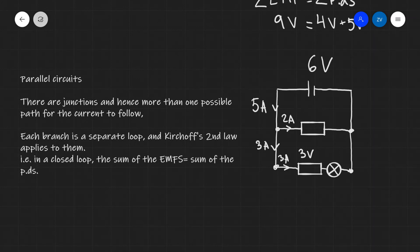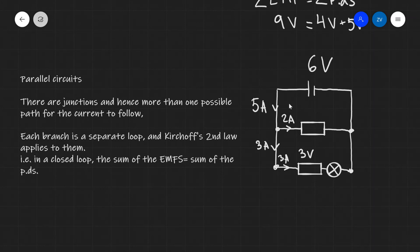Kirchhoff's second law applies separately for each loop. So in every closed loop, the sum of the EMFs is equal to the sum of the PDs. In this first loop, you can think of it as its own separate circuit — there is essentially only one source of PD and one source of EMF. So the PD across the resistor will be equal to 6 volts.